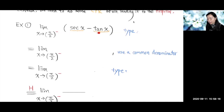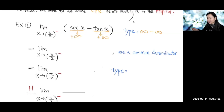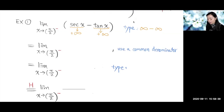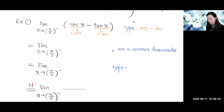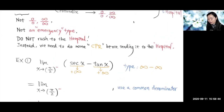Let's look at this first example. As x approaches π/2 from the left side, secant of x approaches infinity and tangent of x also approaches infinity. So this is the type infinity minus infinity, and it is indeterminate.